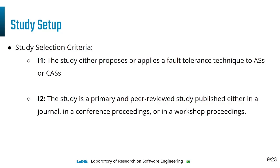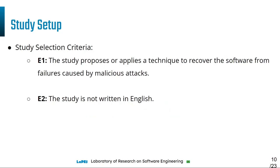We also have study selection criteria used to select our set of studies. The first inclusion criterion is that the study proposes or applies a fault tolerance technique to adaptive systems or context-aware systems. The second is that the study is a primary, peer-reviewed study published either in a journal or in conference proceedings. Exclusion criteria include: the study proposes or applies a technique to recover software from failures caused by malicious attacks, and the study is not written in English.